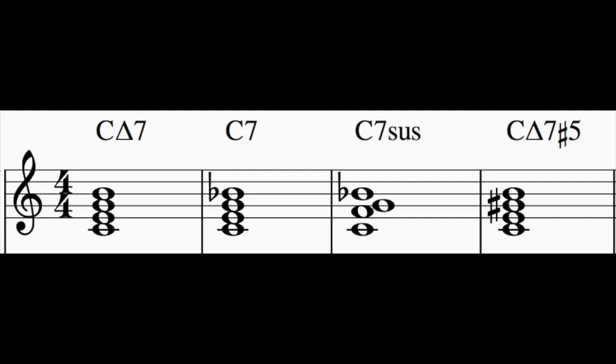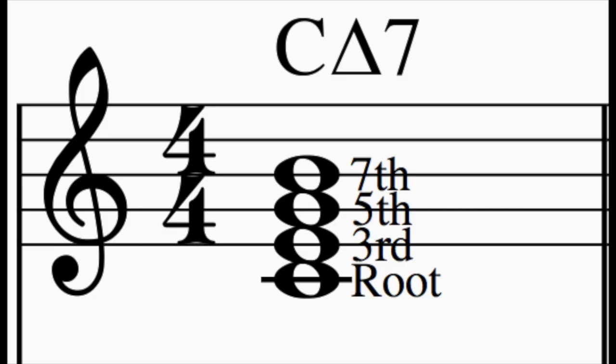It all comes down to three additional notes that can be added to a chord. First, let's look at what a chord is made up of. From the bottom up, it is the root note, the third, the fifth, and the seventh. This is what makes up most seventh chords.